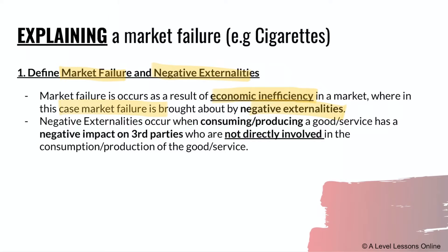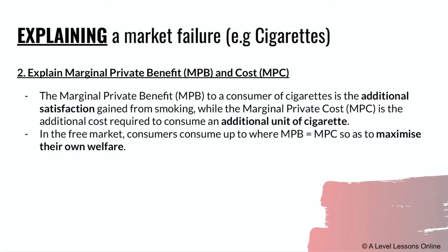Negative externalities occur when the consumption or production of a good or service has a negative impact on third parties who are not directly involved. In this case we're looking at consumption, because cigarettes only produce significant third party effects when consumed. So the focus here is on the consumption market for cigarettes.